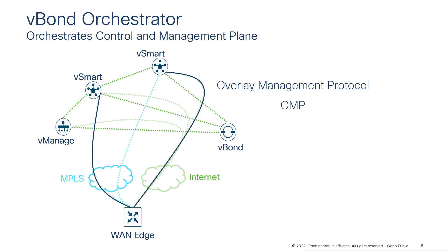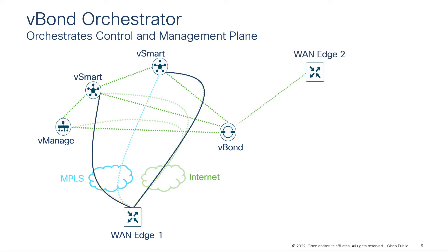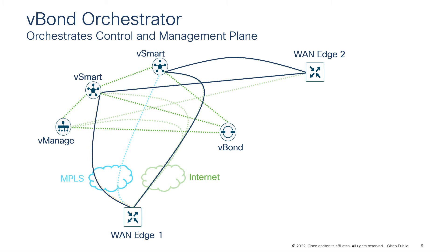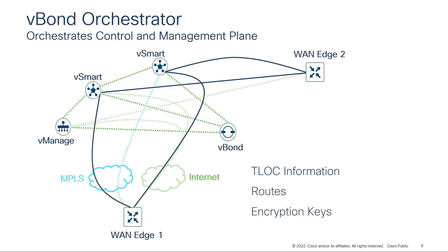With the V-Smarts, only one peering session is formed from each WAN edge to each V-Smart. Once peering is established, control information can be exchanged with our V-Smart controllers, which includes T-Lock information, routes, and encryption keys. T-Lock stands for transport location, which represents the attachment point where a WAN edge connects to the WAN transport. It includes the IP address of the T-Lock along with other information, as well as routing prefixes from a remote site and the encryption keys needed to encrypt or decrypt traffic to or from a particular T-Lock.